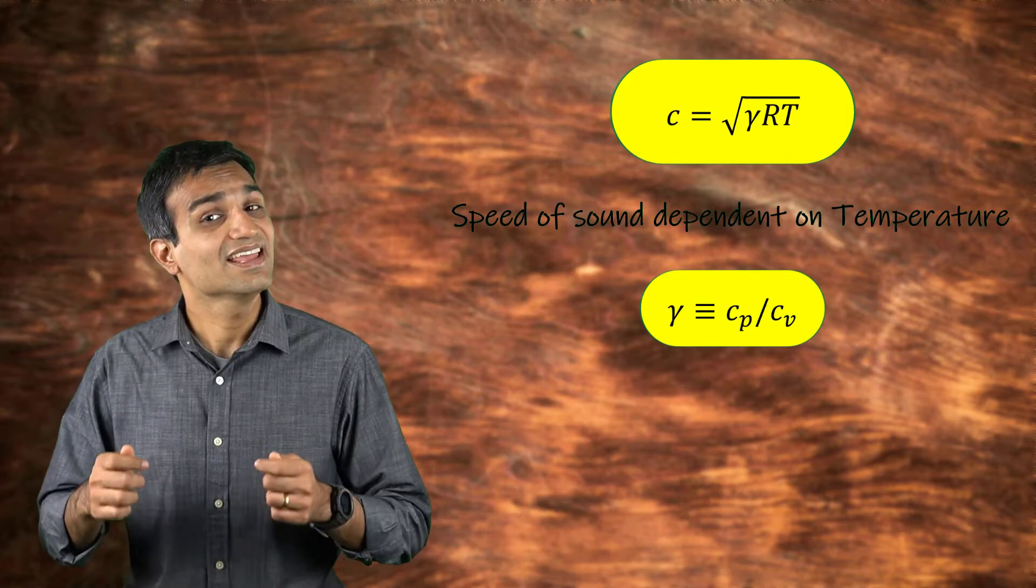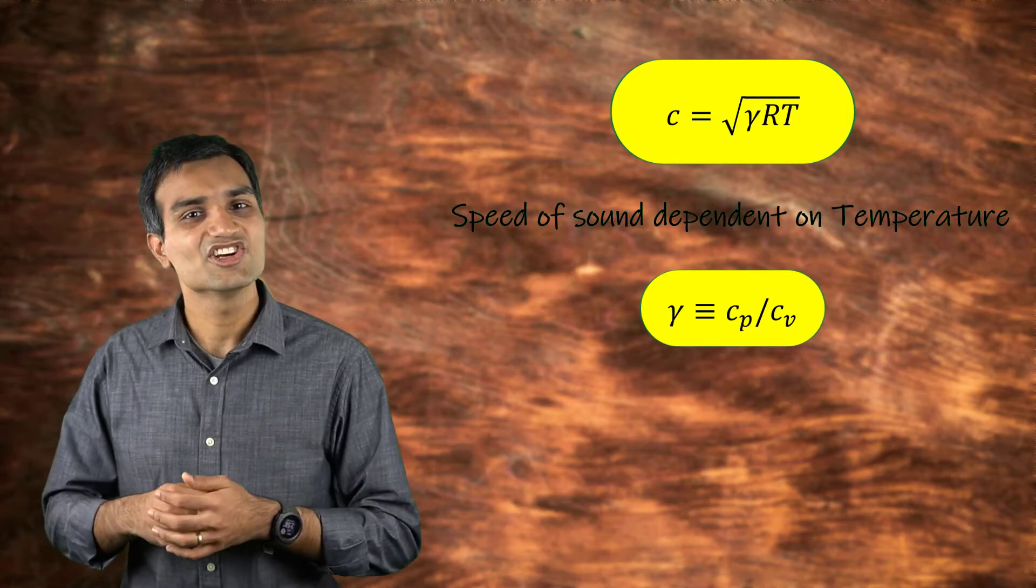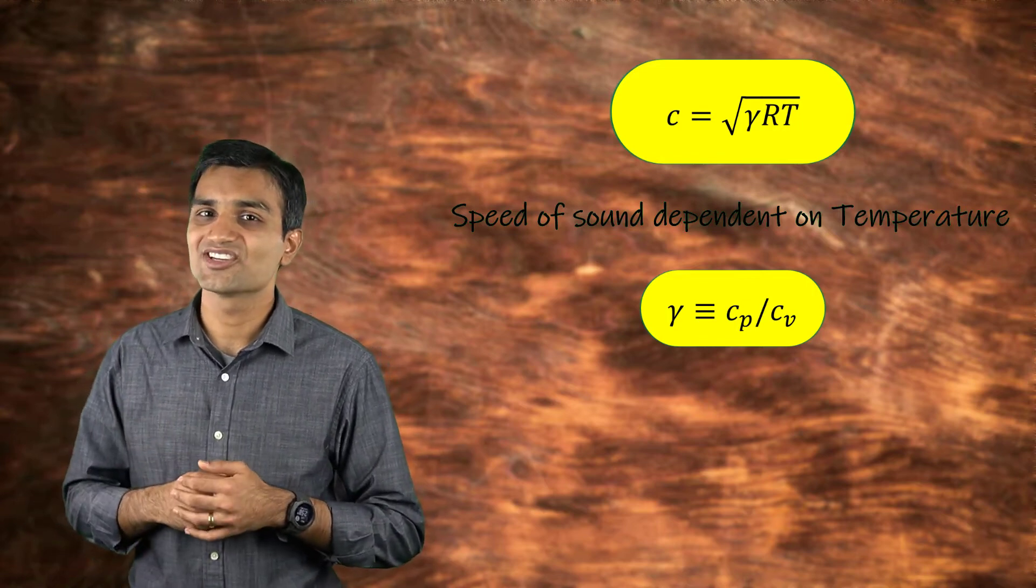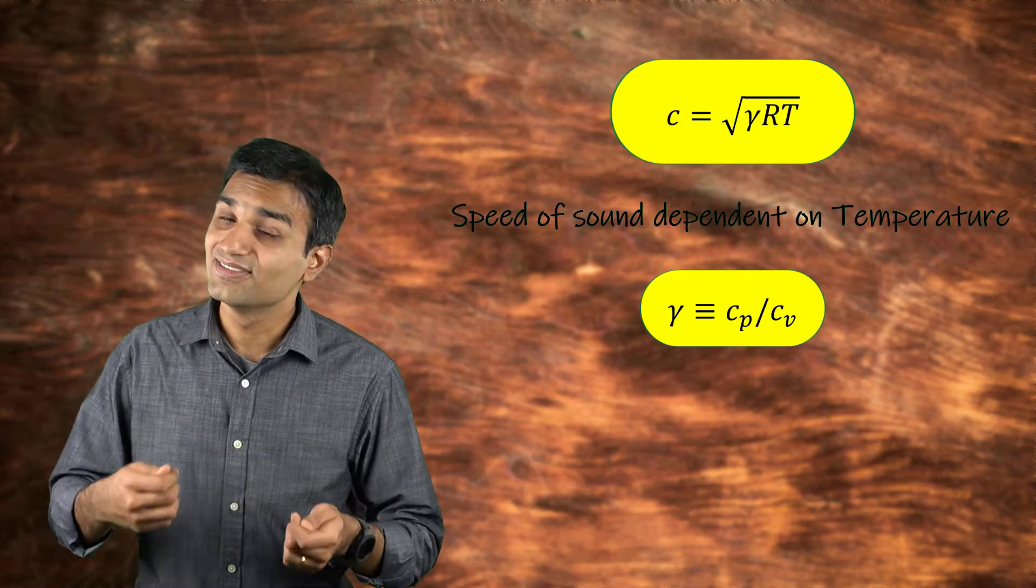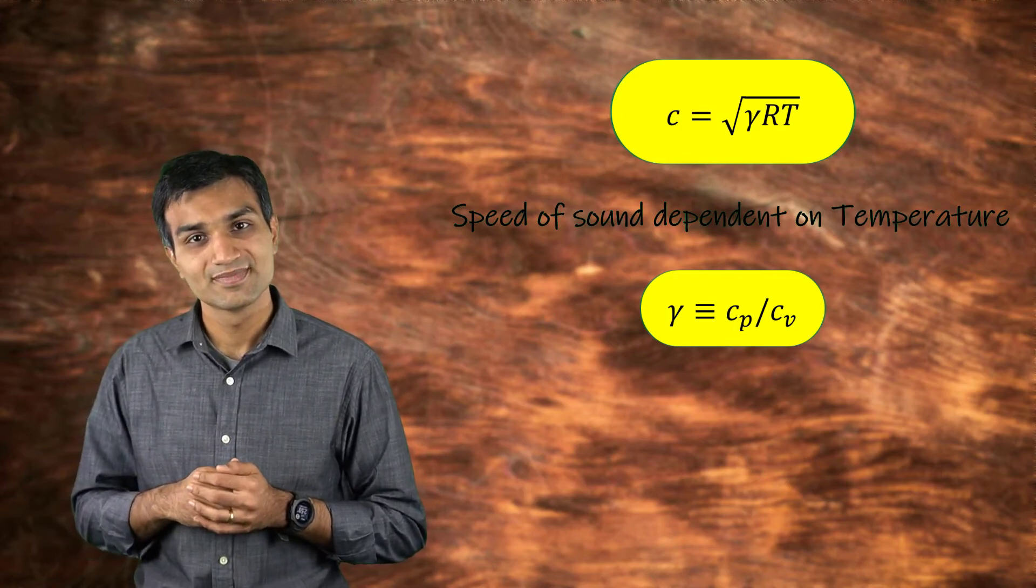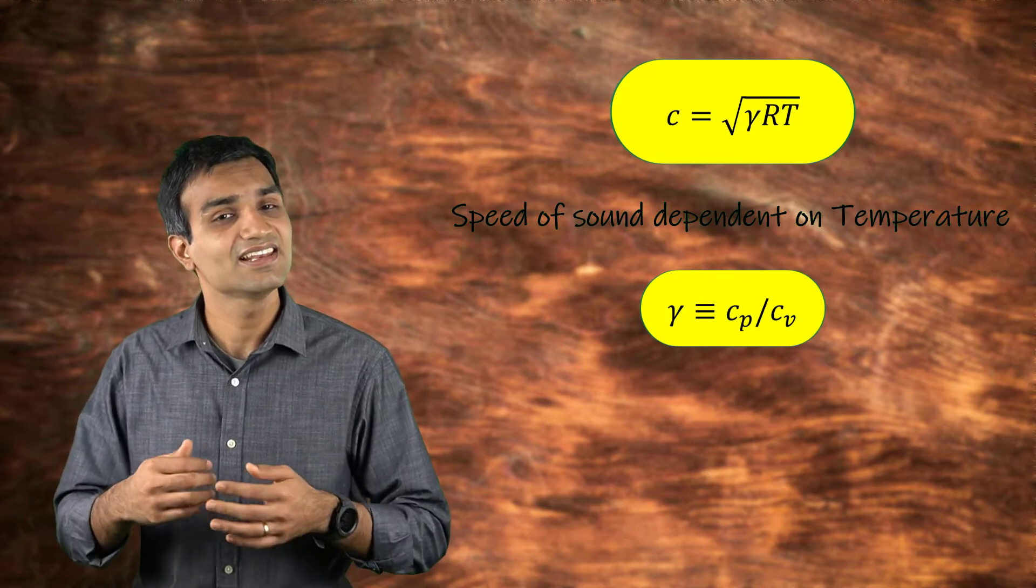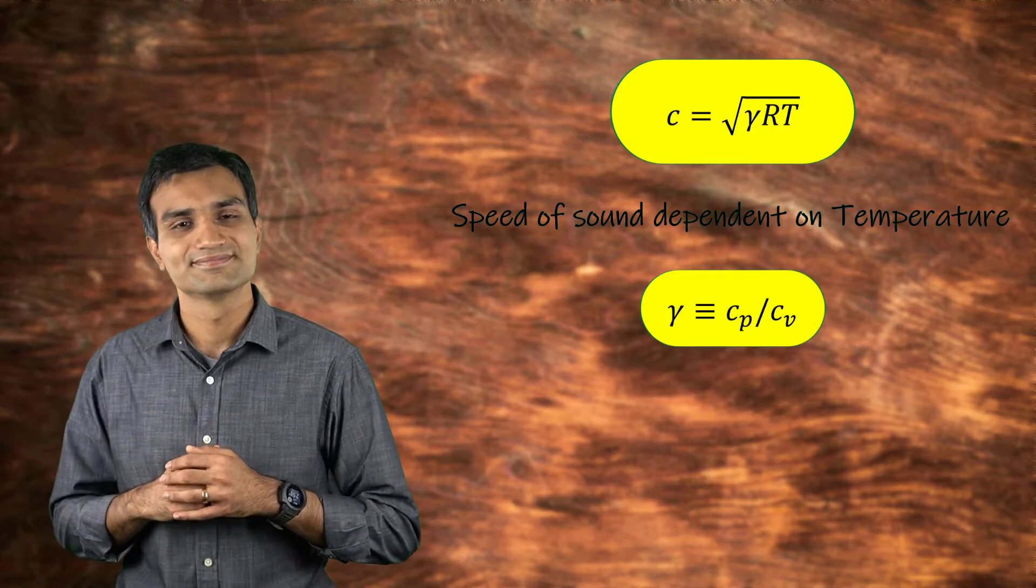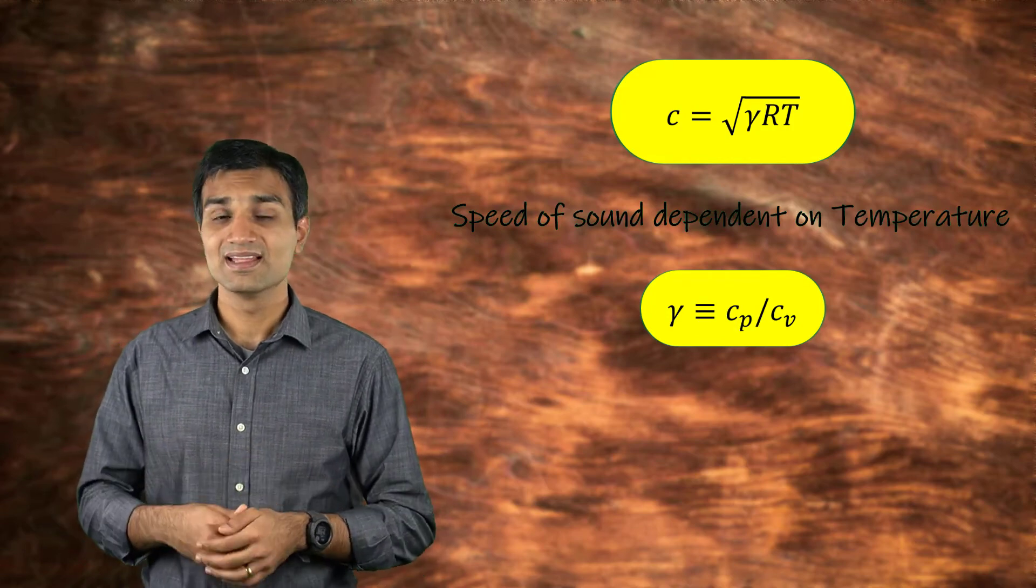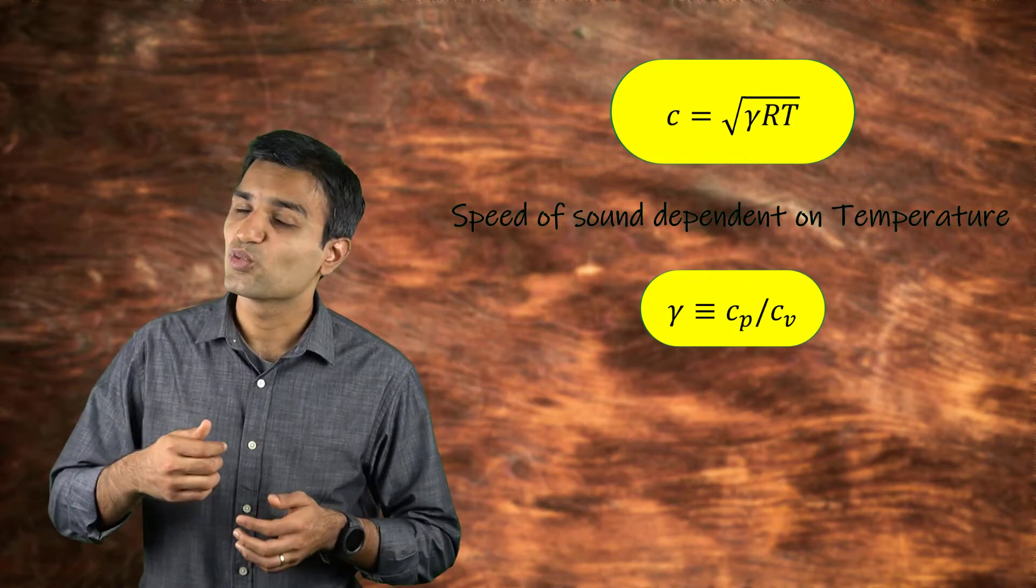Specific heat of a gas is defined as the heat energy added to the gas per degree rise in its temperature. If this addition of heat occurs at constant volume, it increases the internal energy of the system. When added at constant pressure, the gas expands and does work.